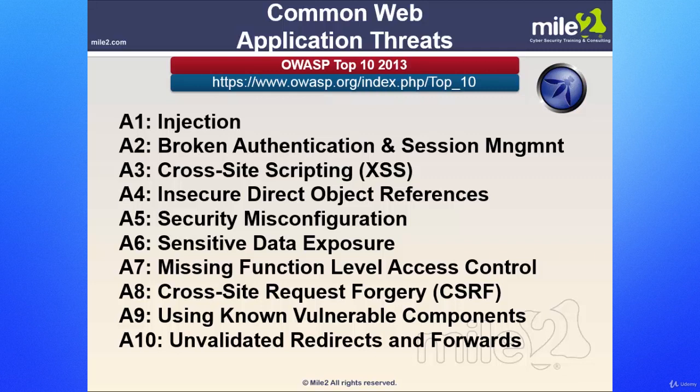Then we have missing function level access control. Applications do not always protect their functions properly. Sometimes those function level protections are managed via configurations or the system, and if the system is misconfigured, there's your problem. Developers must also include proper code checks, as they do forget those. Detecting such flaws may be easy; the hardest part is identifying which pages or URLs those functions exist on to be able to attack.